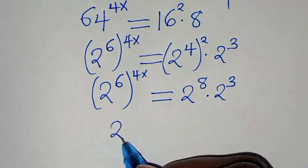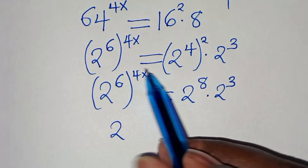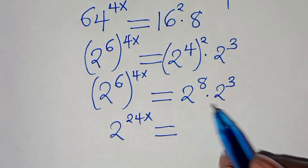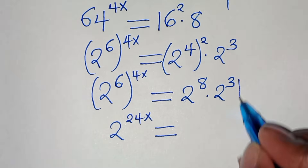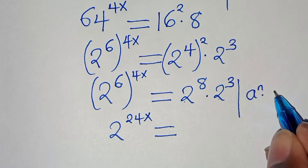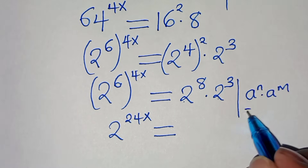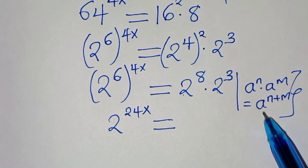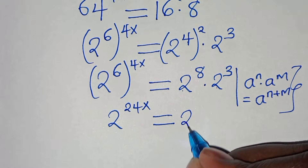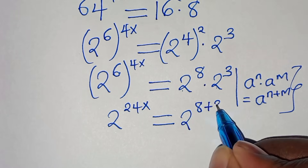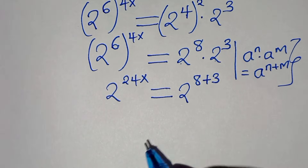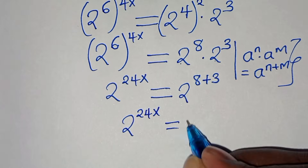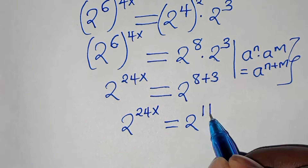So we have 2 to the power of 24x, equal to 2 to the power of 8 times 2 to the power of 3. Using the property a to the power of n times a to the power of m equals a to the power of n plus m, we get 2 to the power of 24x equal to 2 to the power of 8 plus 3, which is 11.